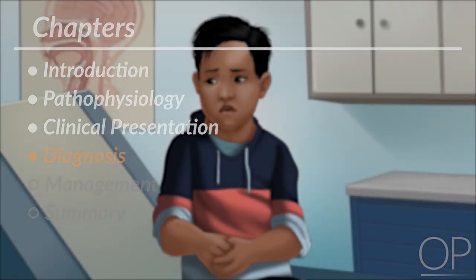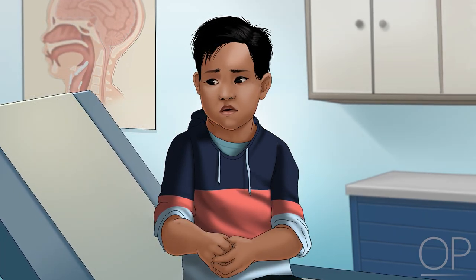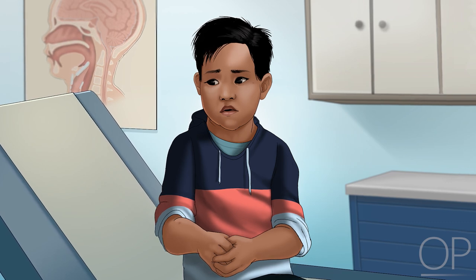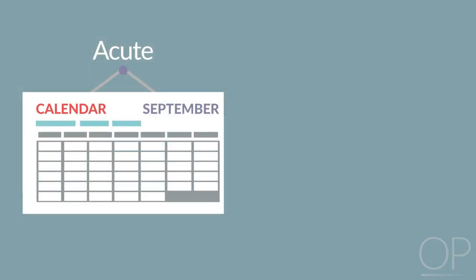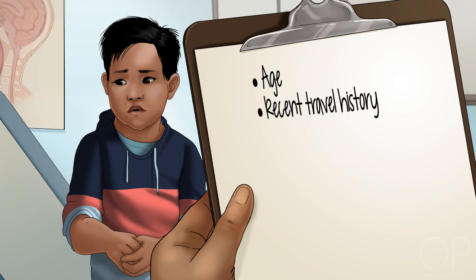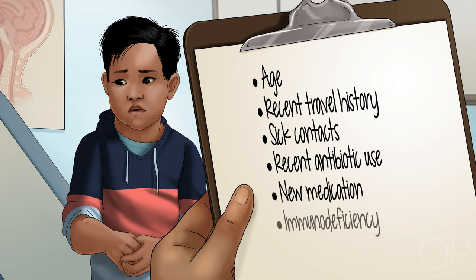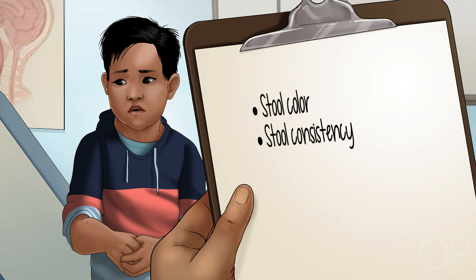Diagnosis. Taking a careful history is the most important step in narrowing down a very large initial differential. Starting with the chronicity of the diarrhea: acute episodes are considered to be less than 2 weeks, and chronic diarrhea is greater than 4 weeks in duration. Age, recent travel history, sick contacts, a history of recent antibiotic use, initiation of a new medication, and evidence of immunodeficiency or systemic illness are all important historical factors.